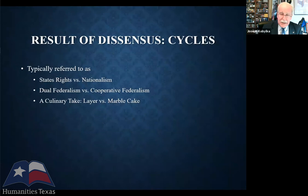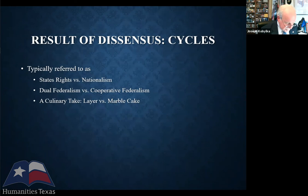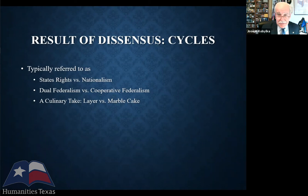As a result of this dissensus — no clear agreement at the convention — there have been cycles in American history of strong national government alternating with strong state governments, typically referred to as periods of states' rights versus nationalism, or dual federalism versus cooperative federalism. If you're a baking aficionado, you can talk about layer cake federalism — dual federalism, states' rights — or marble cake, where nationalism prevails and the national government stirs the batter.